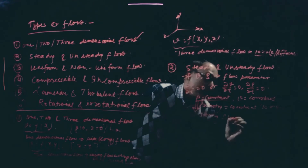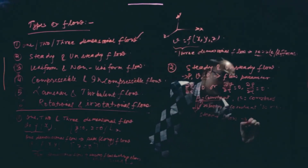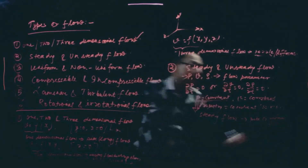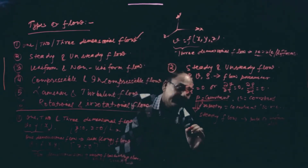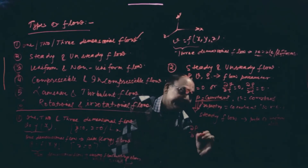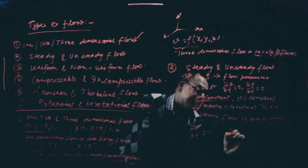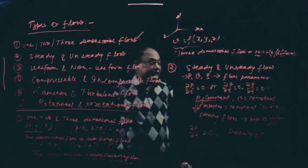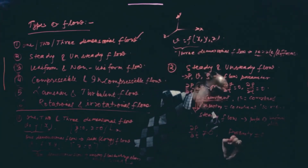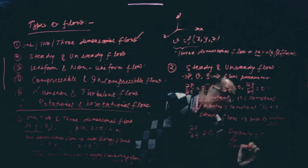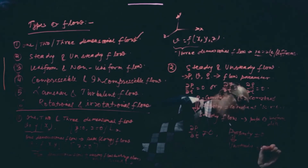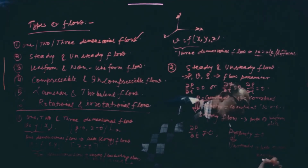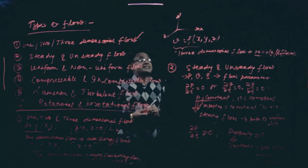An example of steady flow is a pipe of uniform diameter. Now, when dp/dt is not equal to zero — meaning the fluid property is not constant with respect to time, it is changing — that type of flow is called unsteady flow. An example for unsteady flow is a pipe of non-uniform diameter.